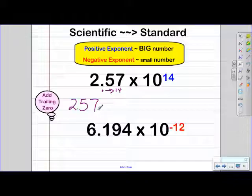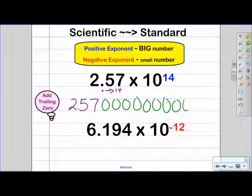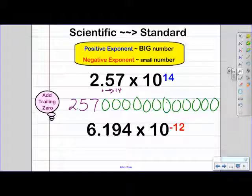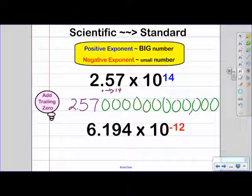So I can just add 12 zeros: one, two, three, four, five, six, seven, eight, nine, ten, eleven, twelve. Now to make this number a little bit more readable, we want to go back and add commas. We want to start from the right, and for every third number, you want to add a comma. And so now we have this in standard notation.